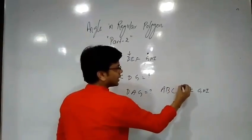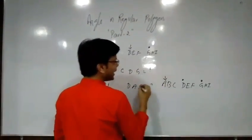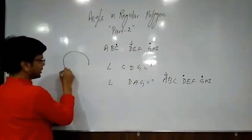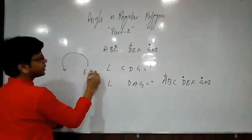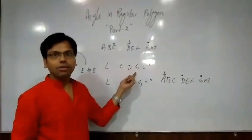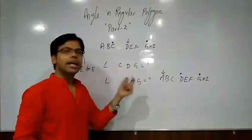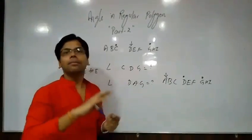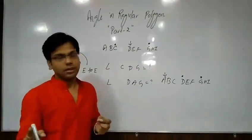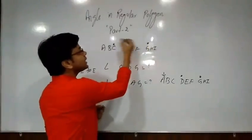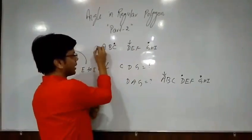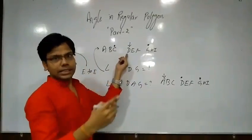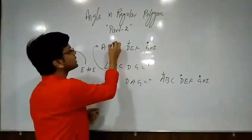D and G are the extreme points and A is the middle one. We only move in the anti-clockwise direction, from extreme point to extreme point. We go C to G in the anti-clockwise direction. We go D to G in the anti-clockwise direction. I can move C to G.